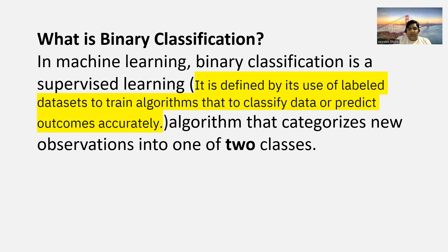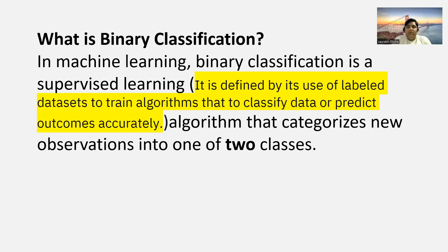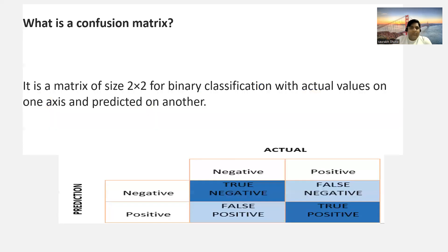That's why labeled data is important for classification in supervised learning. Unless your data is labeled, you cannot call it supervised learning. So remember: labeled data equals supervised learning. Here we have two classes — yes or no — whether a person has that kind of problem or not, whether fraud was committed or not. All these kinds of classification problems fall into this category.